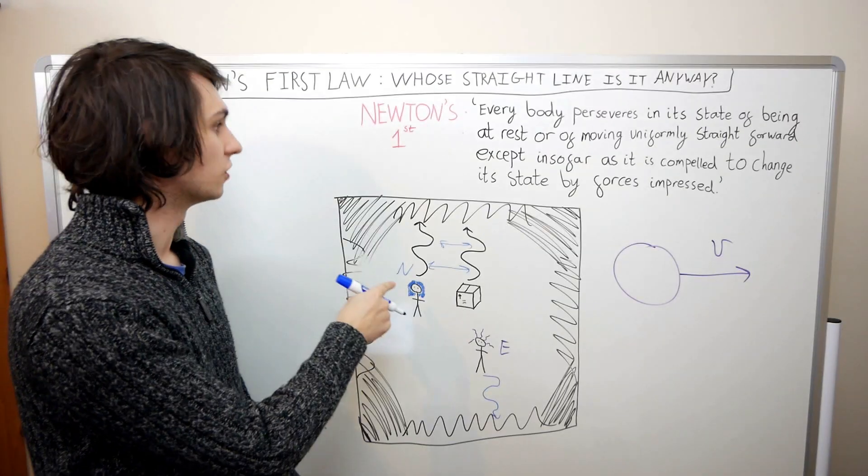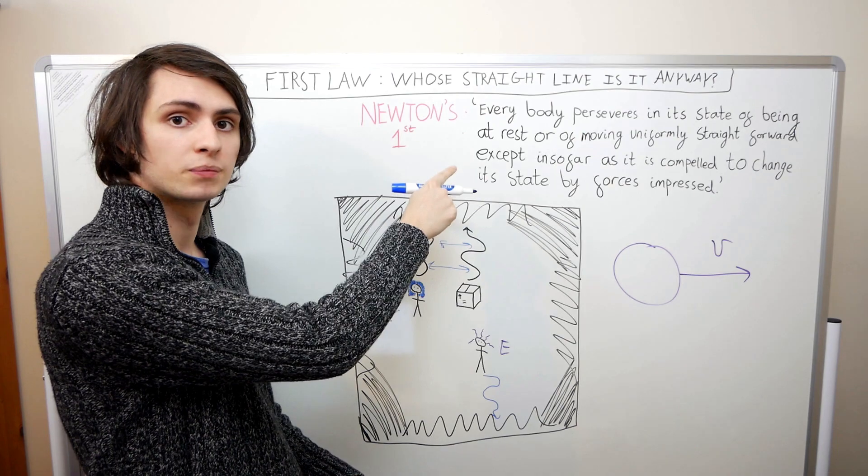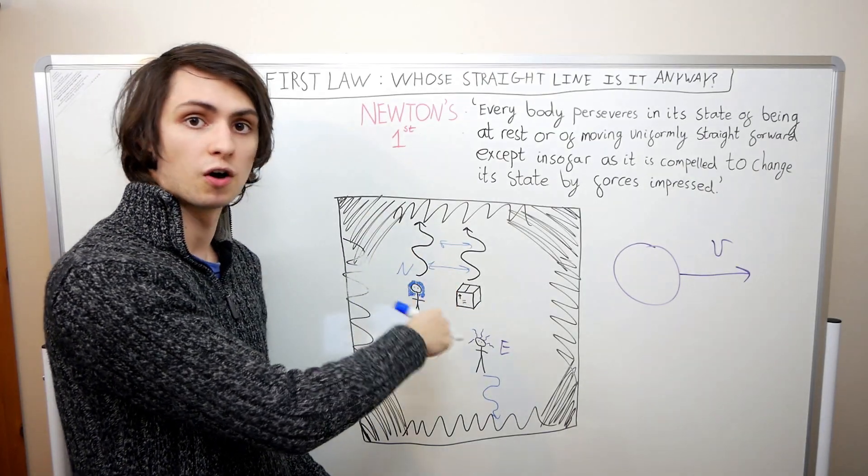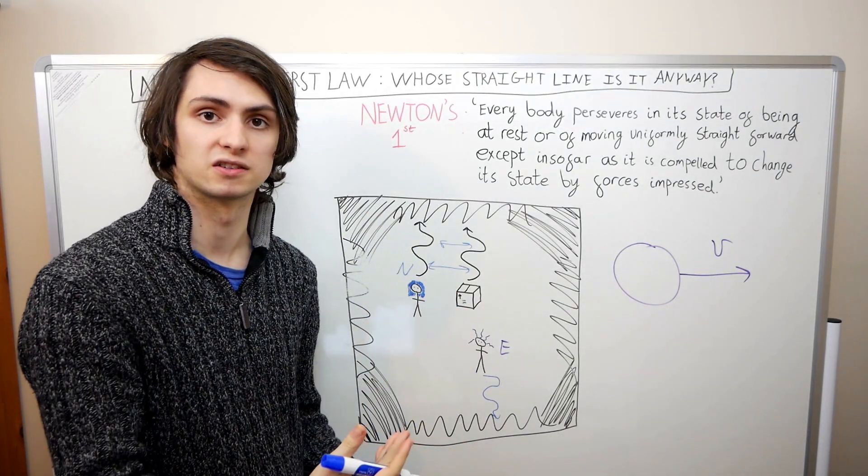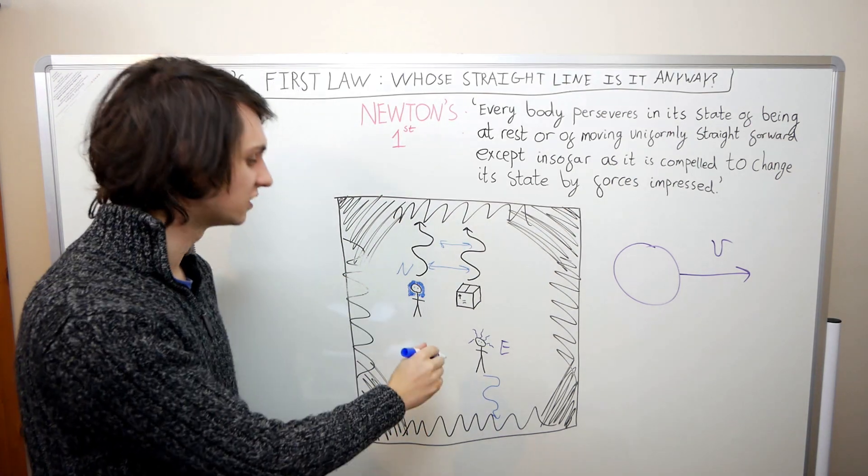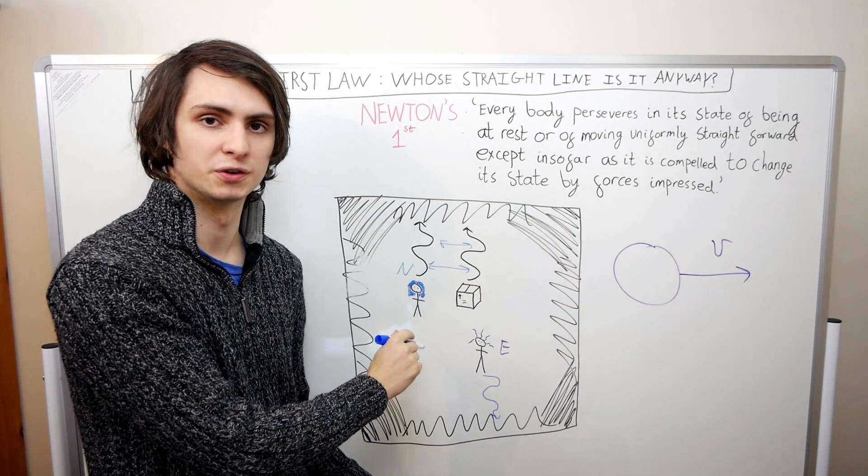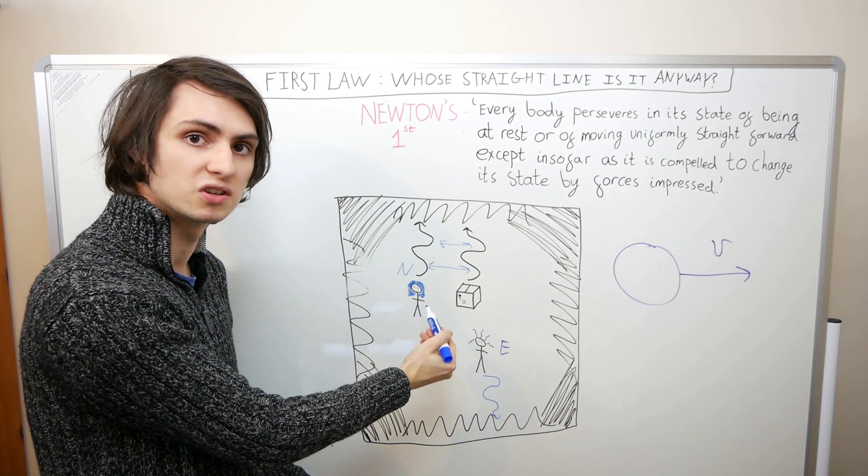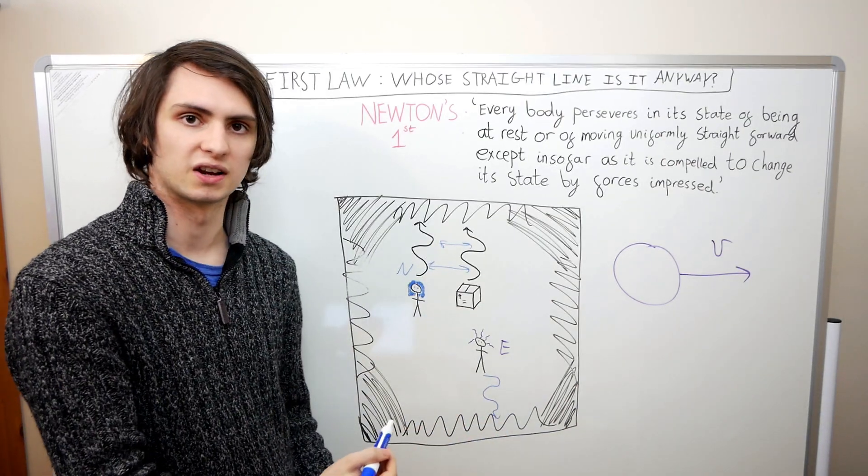But what he sees Einstein doing, he sees Einstein wiggling away from him. So Newton, with his own first law, will conclude that himself and the box are force-free bodies. They're not being acted on by any force. And Einstein is being acted on by a force, because Einstein, according to Newton, is clearly not moving in a straight line.